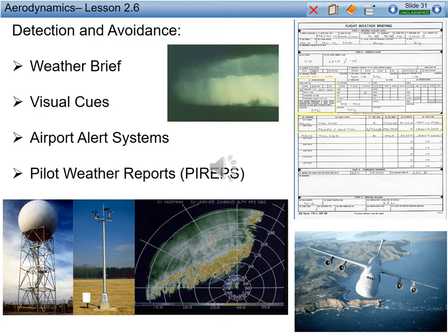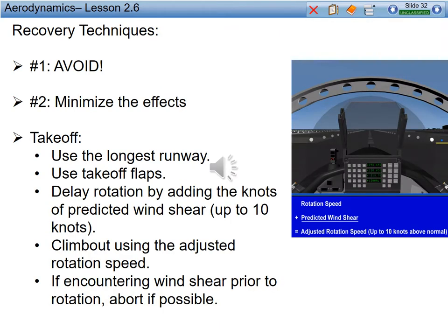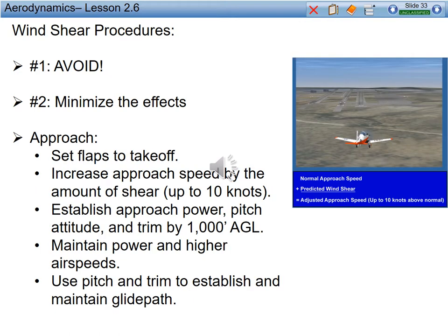For avoidance, we have detection tools at our disposal: weather briefs, visual cues, AWOS, ASOS, ATIS, and PIREPs. Recovery techniques: first, avoid wind shear at all costs — do not go out looking for performance-increasing wind shear. To minimize effects on takeoff, use the longest runway, use takeoff flaps, and delay rotation by adding at least 10 knots to your takeoff speed. Climb out using the adjusted rotation speed. If you encounter wind shear prior to rotation, abort if possible. For approach procedures, set flaps to takeoff, increase speed by 10 knots, establish power, pitch attitude and trim by at least 1,000 feet AGL, and maintain power and higher airspeed, using pitch and trim to establish and maintain speed.